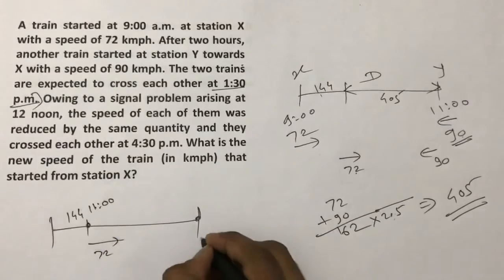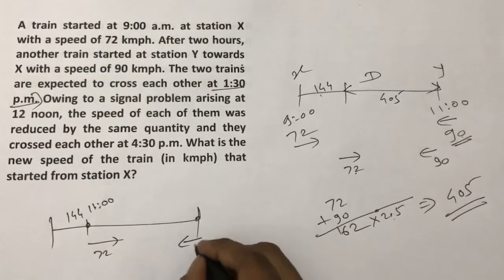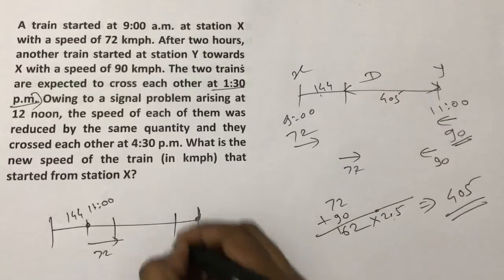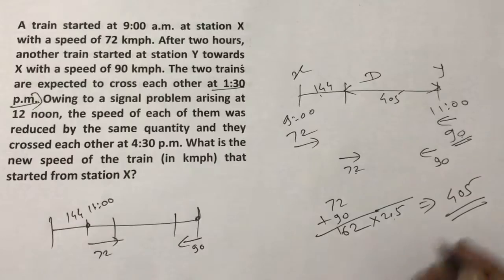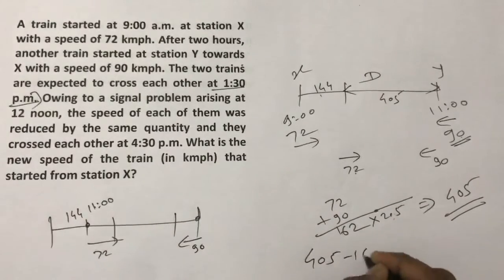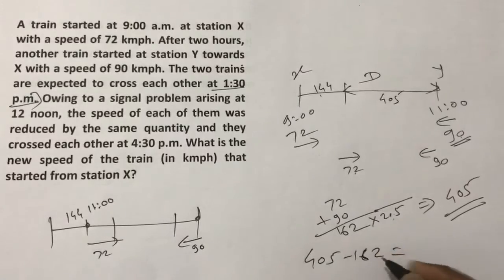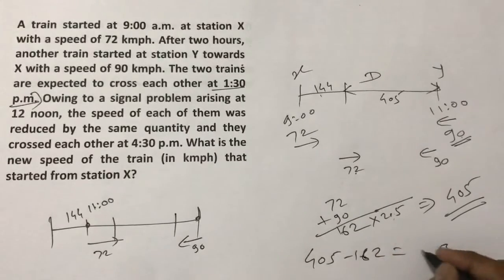So at 12, this would have moved another 72 km forward, and this another 90 km forward. That means the distance between these two would have decreased by 162. So at 12, the distance between them would be 405 minus 162, which is 243 km.